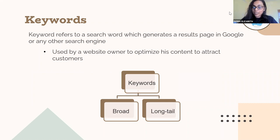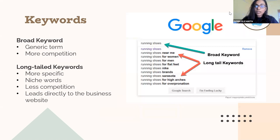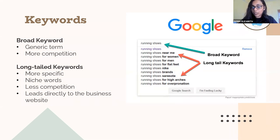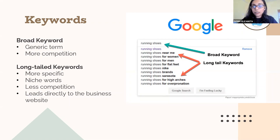There are two main broad categories of keywords: broad keywords and long tail keywords. Broad keywords are very generic terms — for example, 'running shoes' is a very broad keyword. When you map a broad keyword to your website, the results that show up will include all of your competitors, making it very competitive and yielding much less targeted results. Long tail keywords, on the other hand, are more specific and point to very niche words.